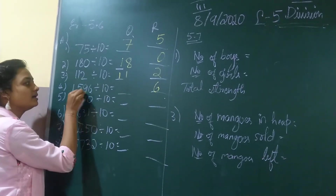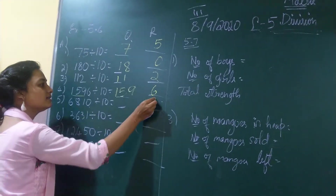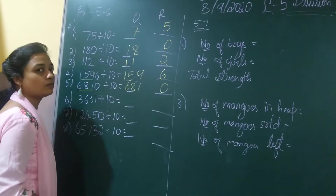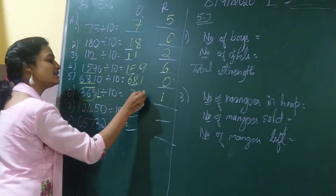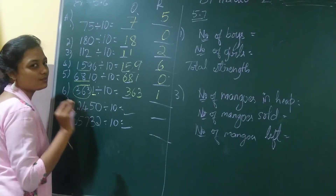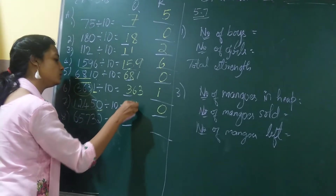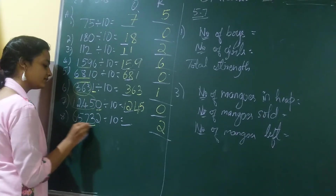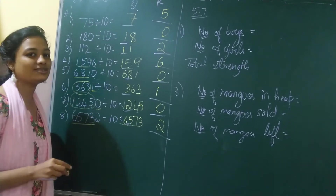1596 divided by 10: 6 is my remainder and 159 is my quotient. 6810 divided by 10: 0 is the remainder and 681 is my quotient. 1 is my remainder and 363 is my quotient. Now with 5 digits it is also very easy — last number is remainder, remaining numbers are quotient. So 65732 divided by 10: 2 is my remainder and 6573 is my quotient.